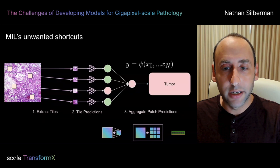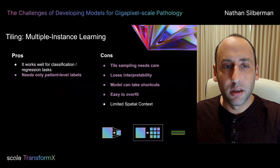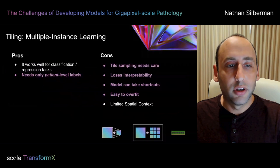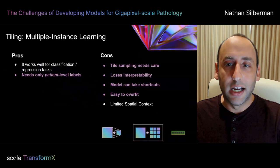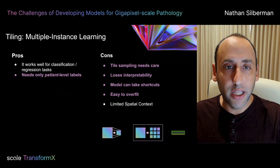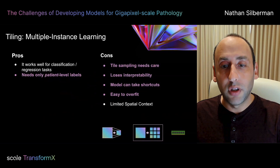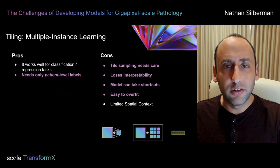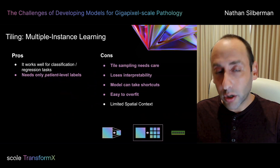Empirically, multiple instance learning works very well for classification and regression tasks and has the fantastic benefit of only needing patient-level labels. Unlike the previous two-stage process where a pathologist had to painstakingly label each tile, MIL allows a much sparser set of labels. On the con side, we do need to be very thoughtful about how we tile. Unlike the multi-stage process, MIL isn't as easy to interpret. When it fails, we need a lot more debugging to understand why. Additionally, the model can take shortcuts, and as a consequence, it's much easier for the model to overfit.